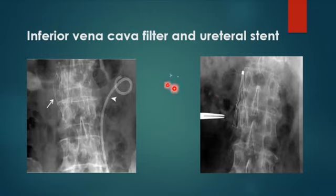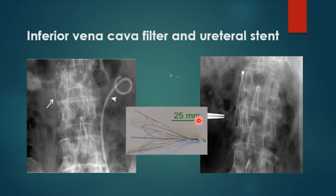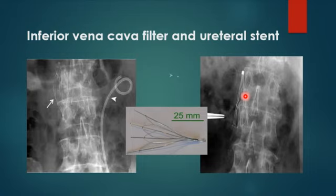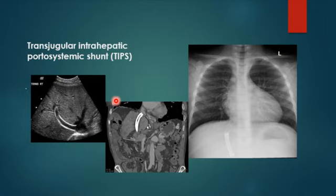An inferior vena cava filter is placed in patients with recurrent venous thrombosis. It looks like a fork on imaging, positioned in the IVC typically below the level of the renal veins, to prevent thrombus propagation. This patient also has a proximal venous stent visible.